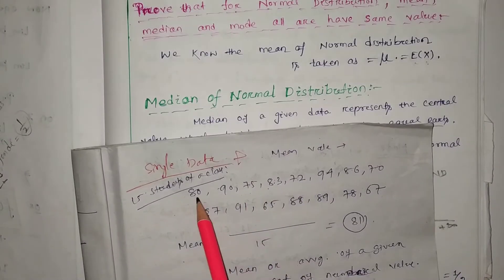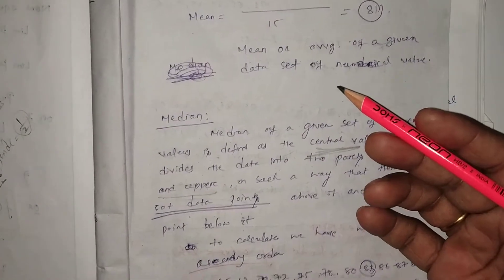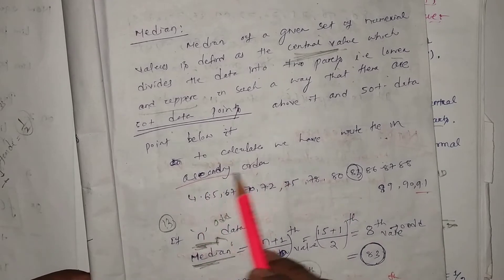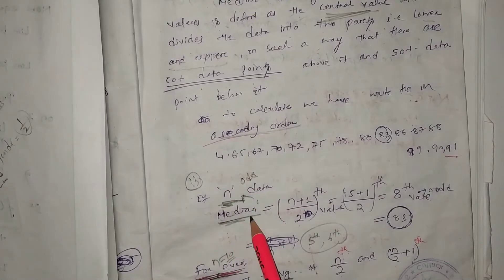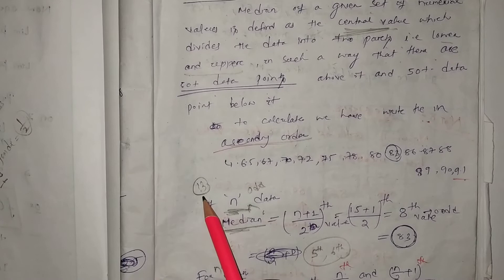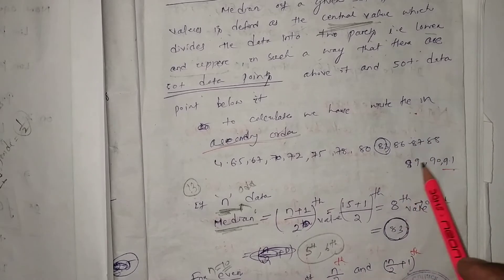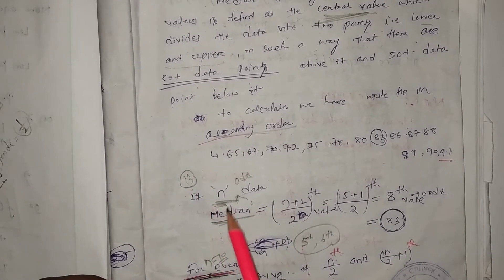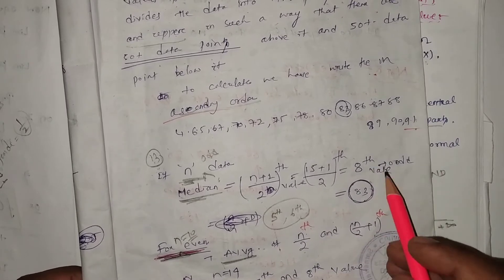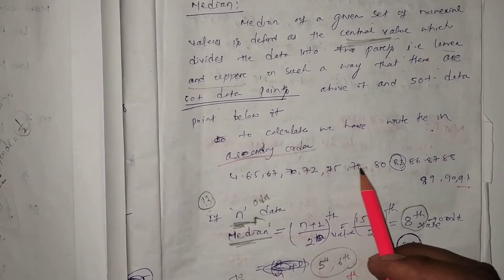Suppose we have some 15 students' data. To calculate the median, first we write the data in ascending order, then we consider how many numbers are given. If n is odd, the median will be the (n+1)/2 th value. For example, if 13 numbers are there, the median will be the (13+1)/2 = 7th value — that is, 1, 2, 3, 4, 5, 6 — the 6th value will be our median.